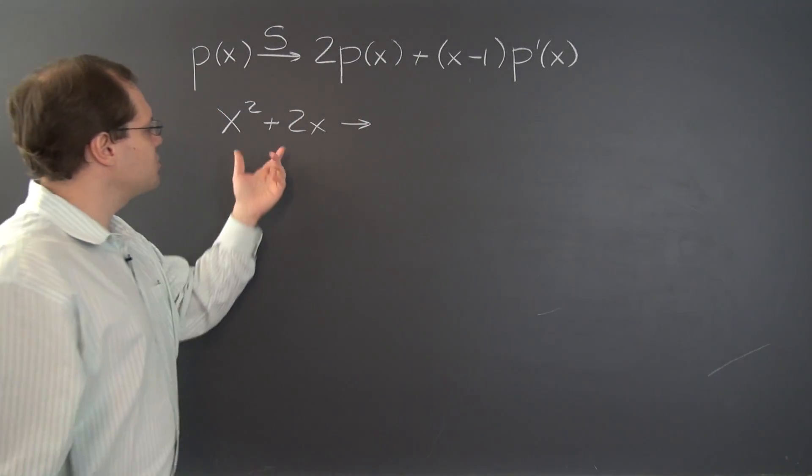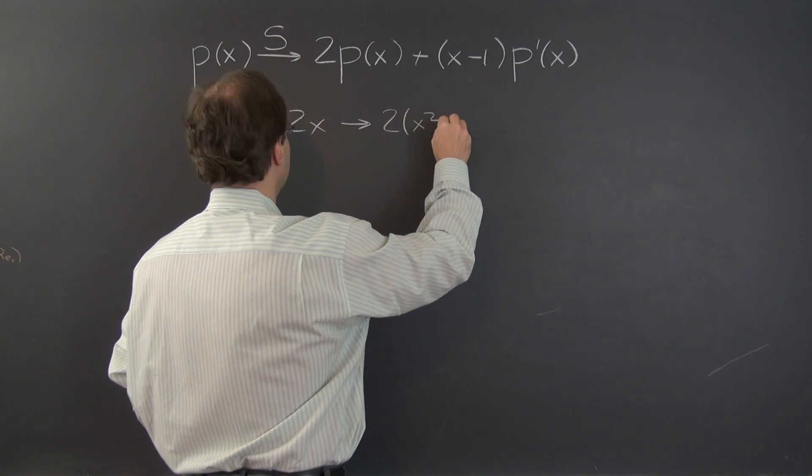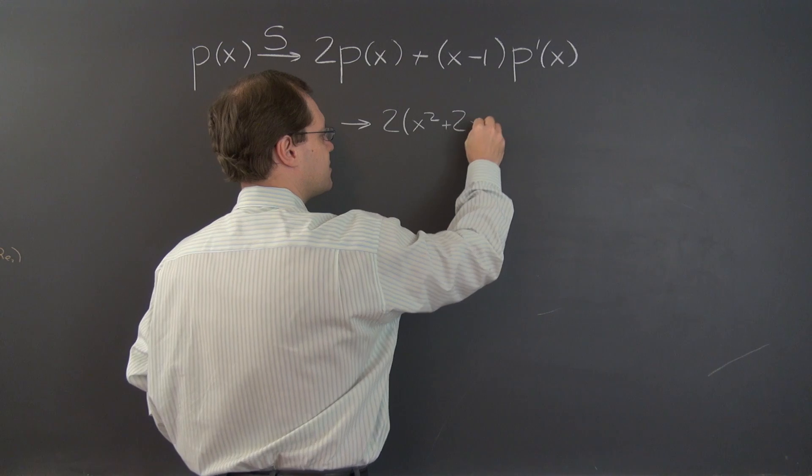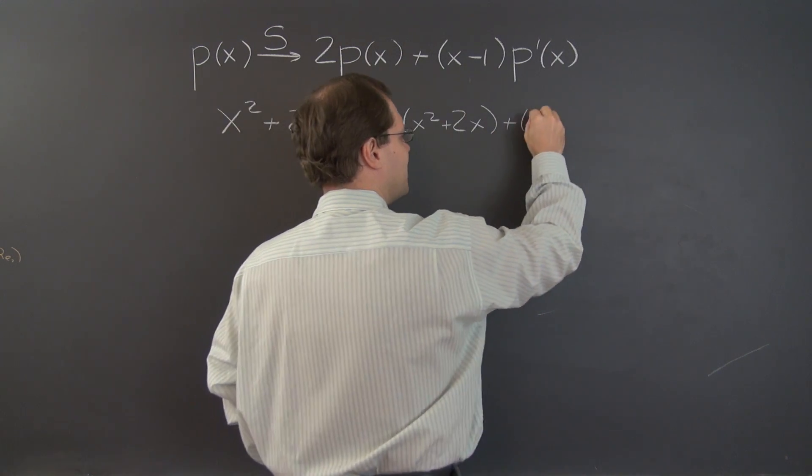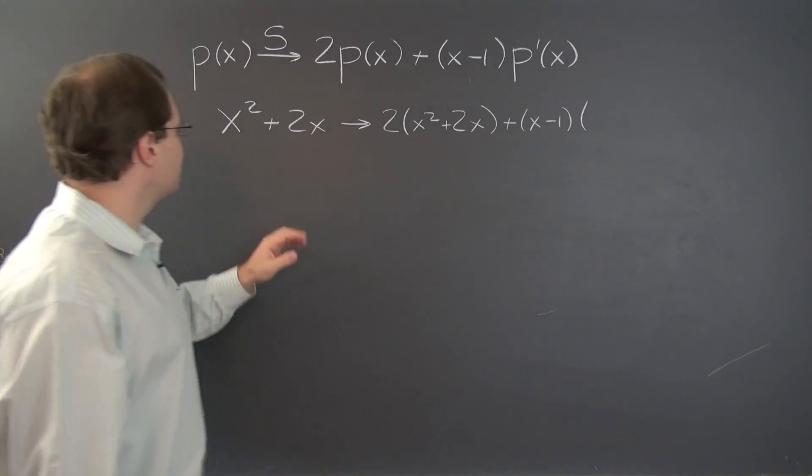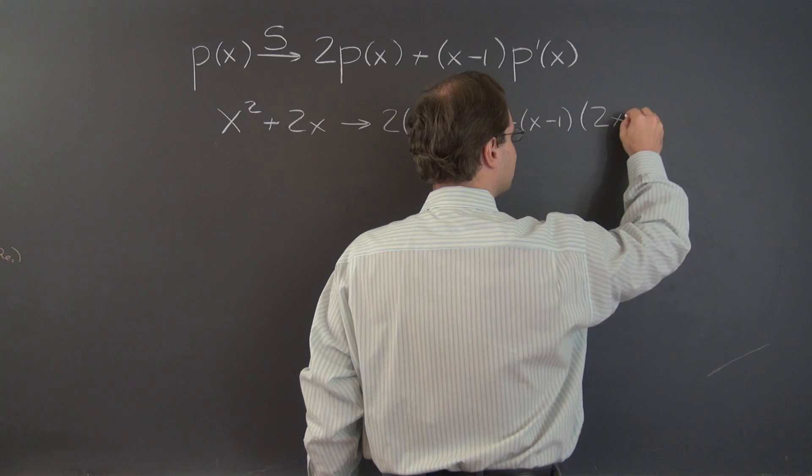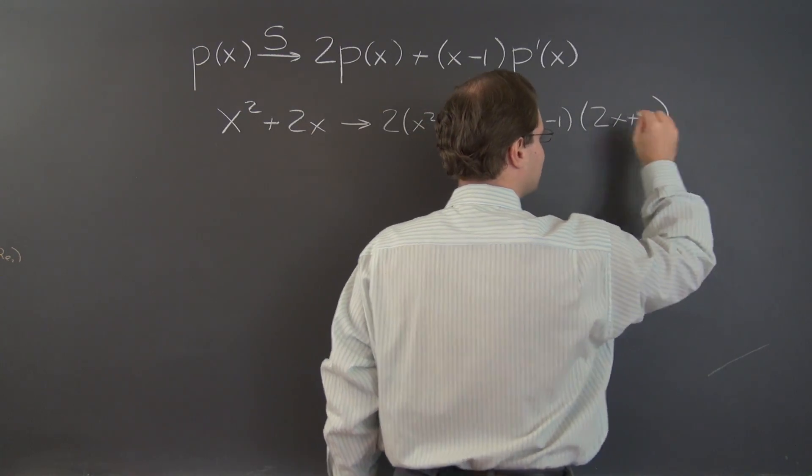Okay, and x squared plus 2x becomes twice itself, so 2x squared plus 2x plus x minus 1 times its derivative, which is 2x plus 2. All right.